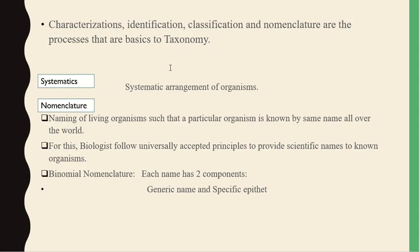What are the bases of taxonomy? They are characterization, identification, classification, and nomenclature. What is systematics? Systematics is the systematic arrangement of organisms. What is nomenclature? Nomenclature is the naming of living organisms such that a particular organism is known by the same name all over the world. For this, biologists follow universally accepted principles to provide scientific names to known organisms.